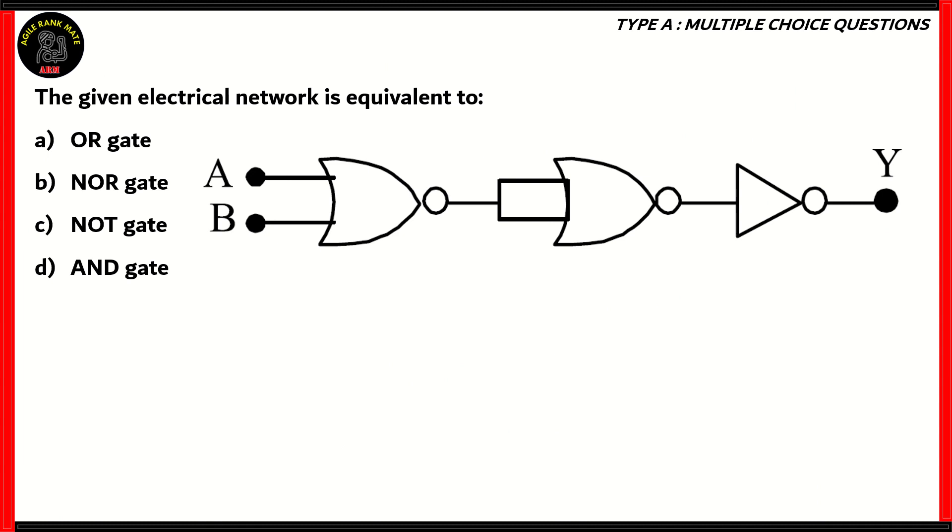Now, let's look at another question. The given electrical network is equivalent to OR gate, NOR gate, NOT gate, or AND gate. So, this is based on the chapter semiconductors. Over here, we're asked to find out whether the combination of these gates gives us a result y, and we need to find out the nature of that result in order to find out which type of gate is the given, which type of gate is it close to.